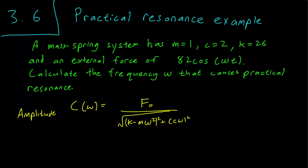Hello class, this is section 3.6 and we are going to work through a practical resonance example. We have a mechanical oscillating system where the mass is 1, the friction constant is 2, and the spring constant is 26. We also have an external force of the form 82 cosine omega t.